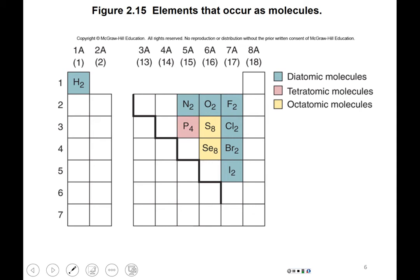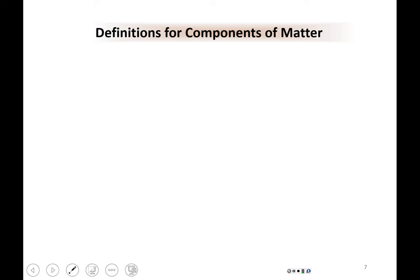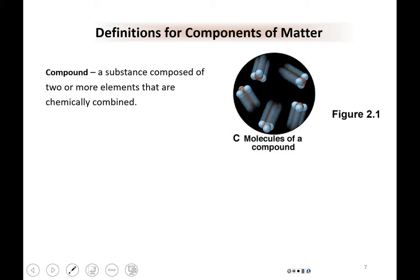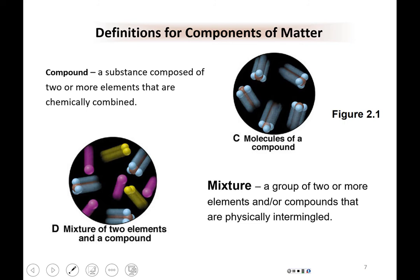Phosphorus, sulfur, and selenium are also molecules in their natural form. A compound is a substance composed of two or more elements that are chemically combined — so a compound is a molecule, but it has more than one element in it. And then finally, a mixture is a group of two or more elements or compounds that are physically intermingled.